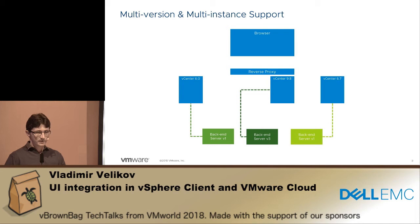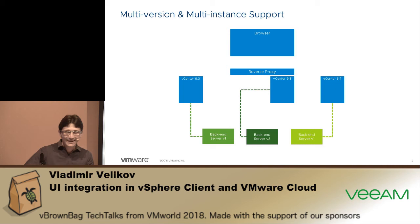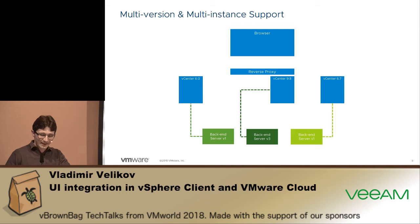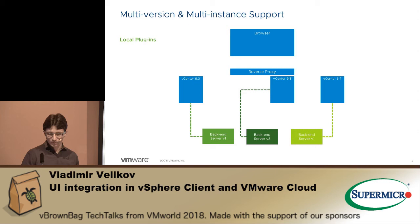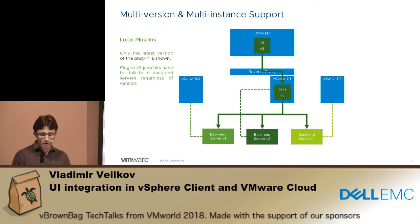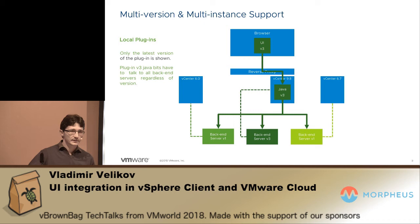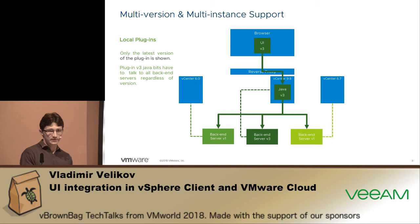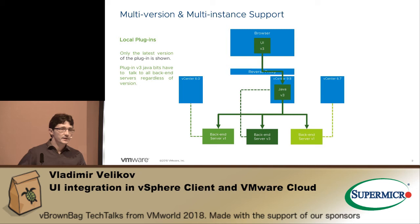Here we have a picture with wildly different versions of vCenter: 6.0 on the left, 6.7 on the right, and 9.8 — some future version. They're connected to three different backends. In the local plugin scenario we get only one plugin deployed on the vSphere client that has to talk to all these backends, meaning when there's a new version all partners have to provide a new plugin version that's able to talk to their latest backend but also to all old backends. This is increasingly difficult for partner solutions, so they're cutting back on the supported versions from their side.